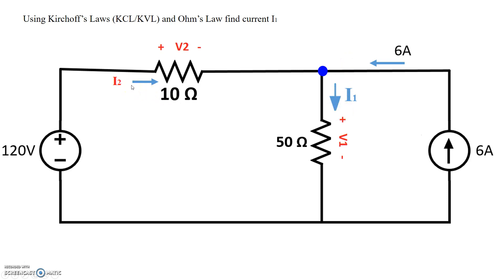and the current going out is equal to I1. So the sum of the current coming in is I2 plus 6 amp, and the sum of the current going out is simply I1. So we have I2 plus 6 is equal to I1. So we'll keep that expression there for now.